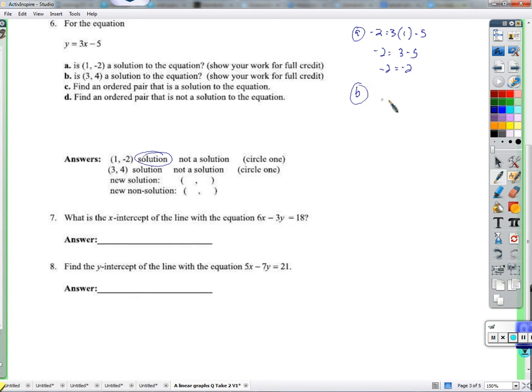Part B. I need to try it again. 4. Is that what I'll get when I do 3 times 3 minus 5? 3 in for x, 4 in for y. Does it work? 4 equals 9 minus 5. 4 equals 4. Yes. That's also a solution. Now we need to find a solution. That would be any x and y that works. How about 0 for x? That's easy. Negative 5 for y. How about plug in 2 for x? Let's see what comes out for y. Let's see what happens there.